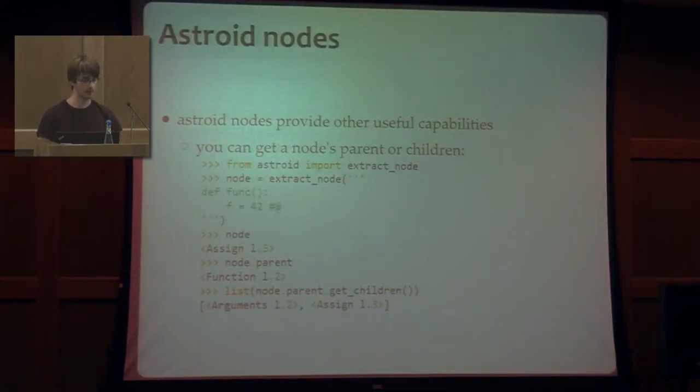Now, I mentioned earlier that Astroid trees are a little bit more capable because they provide some capabilities that are not just useful for static analysis, but for other purposes as well. And for instance, you can retrieve the parent of a node, if you have a node, as it is in this example where the parent of the assigned statement will be the function where it is defined. Also, you can retrieve the children of a node. You can implement traversal functions if you want just with these two things.